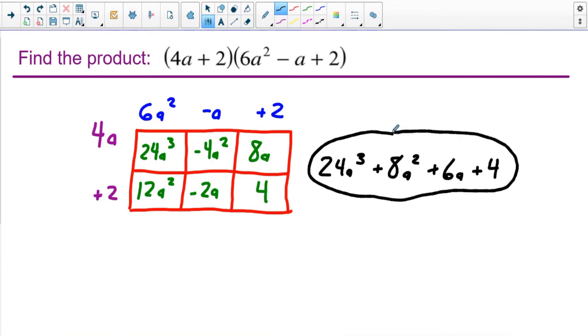All right, so that's really as hard as it gets. Using the box method, just be careful. Keep track of your coefficients, your exponents. It can be easy to make a mistake in there sometimes.